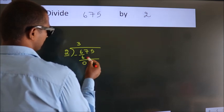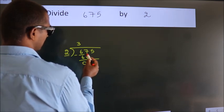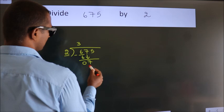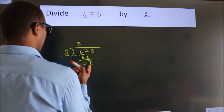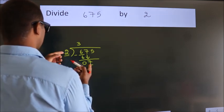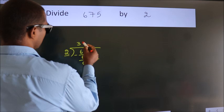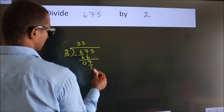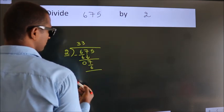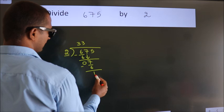After this, bring down the next number. So, 7 down. A number close to 7 in the 2 table is 2 threes, 6. Now, we subtract. We get 1.